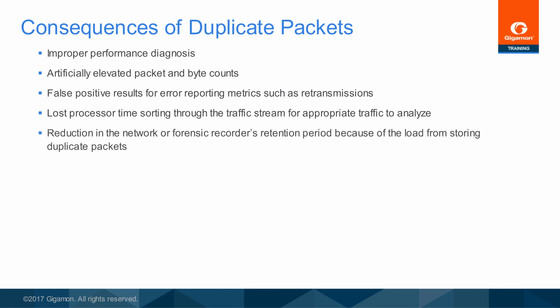Forensic recorders have large amounts of storage space, but this space is finite. Typically, these devices use a circular storage approach, which means when the disk space is full, the oldest data is overwritten. Recording duplicate traffic can significantly reduce the retention period for traffic, which increases the possibility that the specific packet you're looking for might not be available.